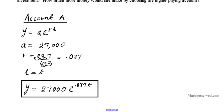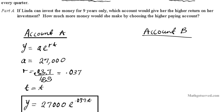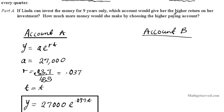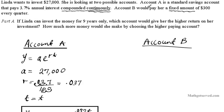Now let's take a look at account B. For account B, we have a constant growth. How do I know that the growth is constant? It says right here that it pays a fixed amount of $300 every quarter. So the amount of payment is fixed at $300 every quarter. So let's generate a model.